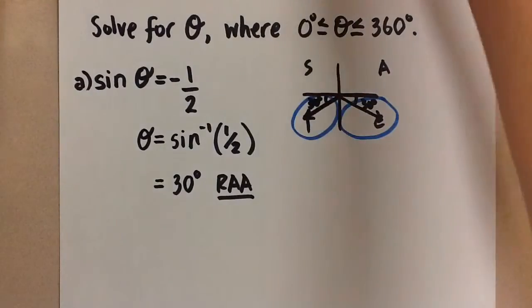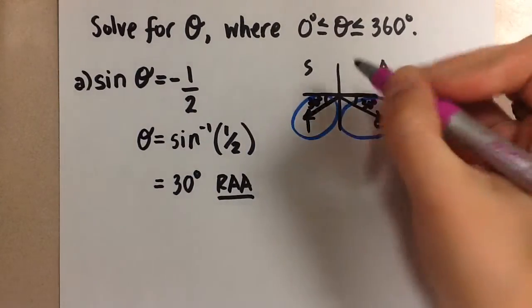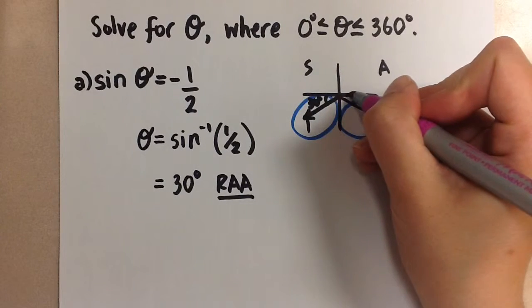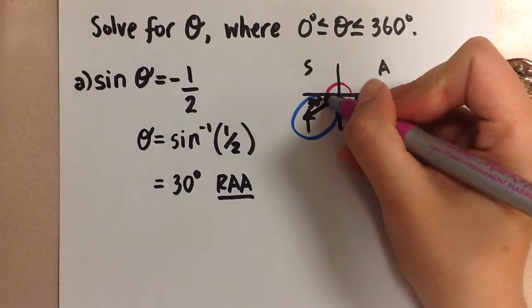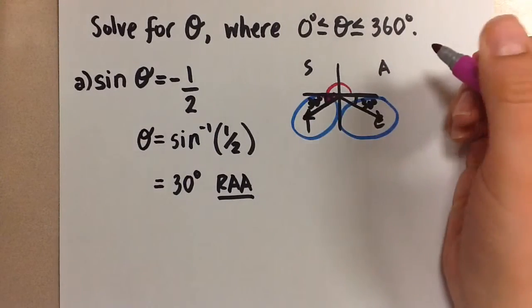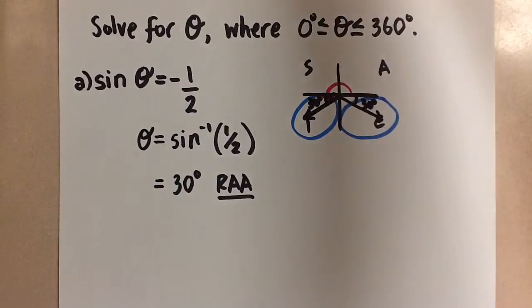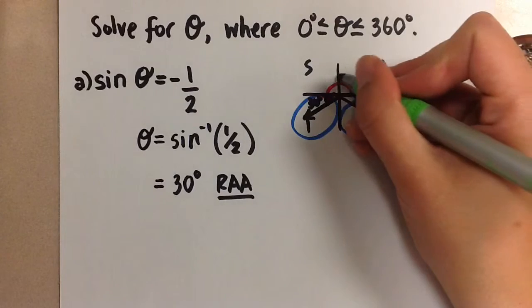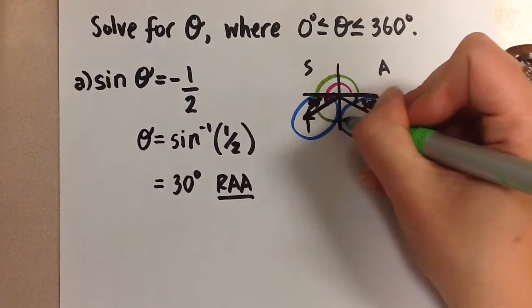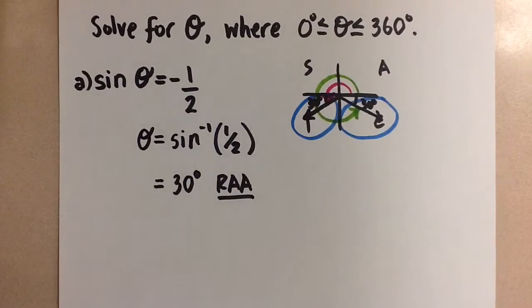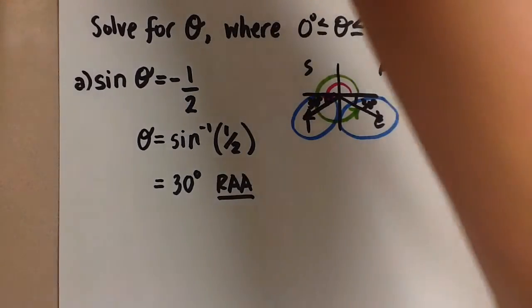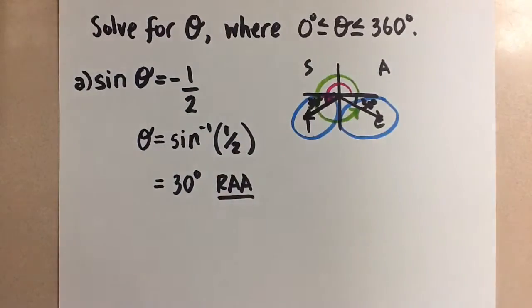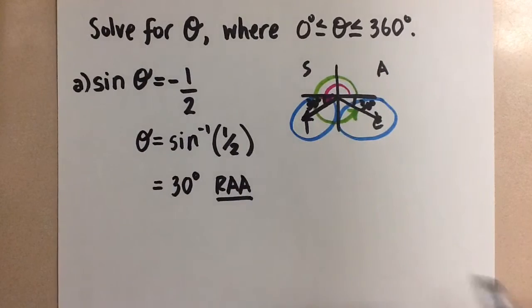Now we're going to find angle theta by going from the positive x-axis to the first terminal arm and then we're going to find our second value of theta by going from the positive x-axis around counterclockwise to the second terminal arm and that gives us both values of theta that are going to satisfy this equation that we were given.